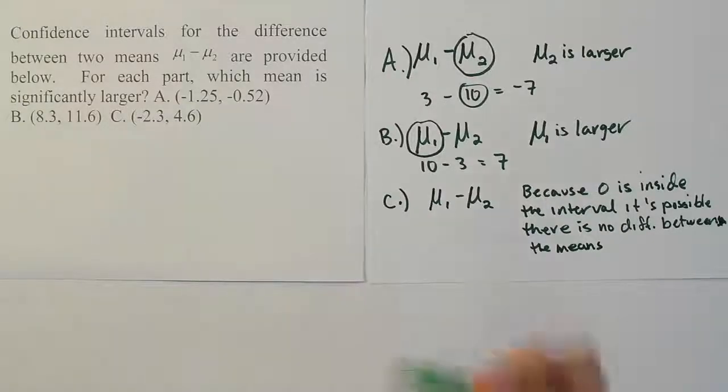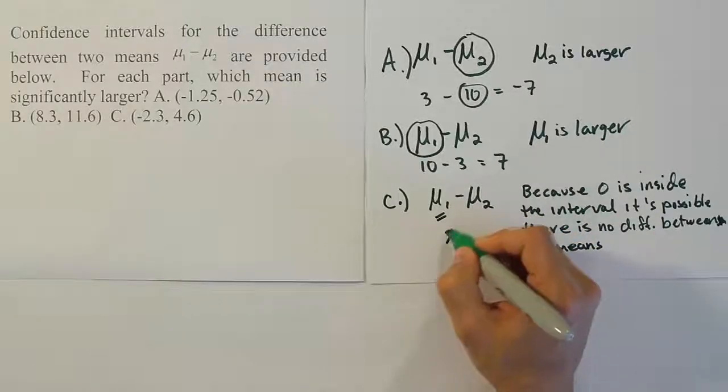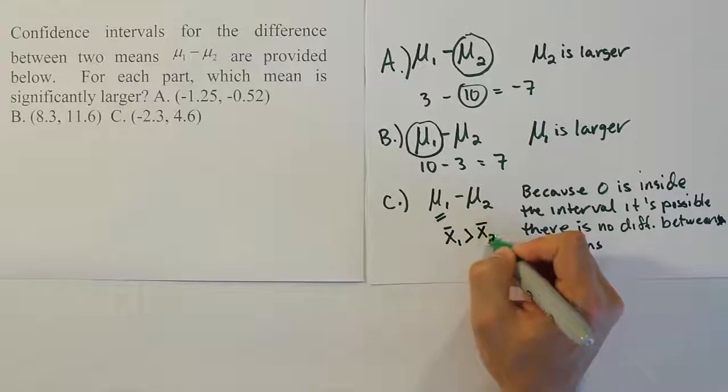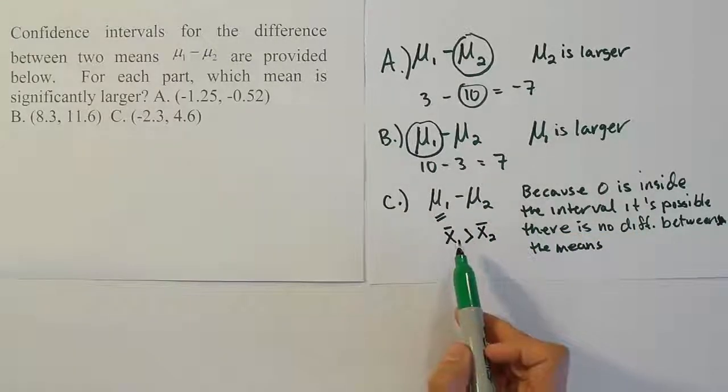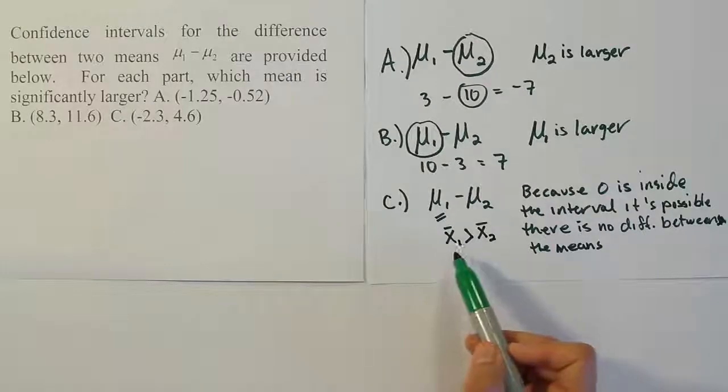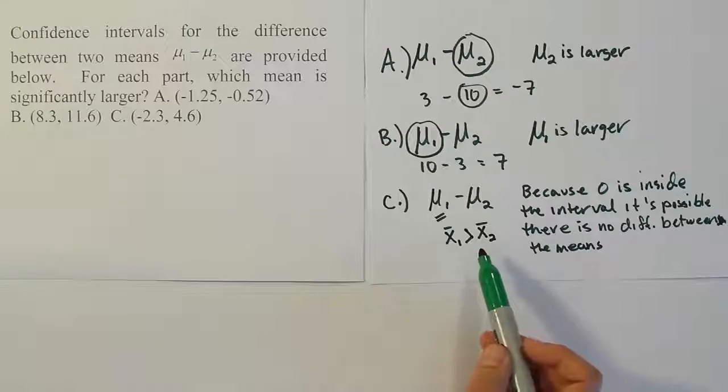which means that probably the x-bar for mean 1 was greater than the x-bar for mean 2. So I can probably say this, that x-bar 1 was greater than x-bar 2. Because when they did subtraction, assuming again that these x-bars are positive numbers, we did get a slightly more positive interval.